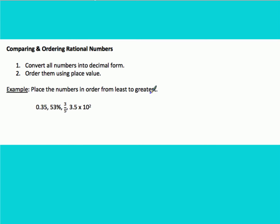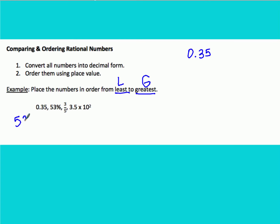Our first example says place the numbers in order from least to greatest, so make sure you start with your smallest number first — always read the directions carefully. Our first number is 0.35, which is already in decimal form. Our next number is 53%; to change a percent into a decimal, move the decimal two spaces to the left, and we get 0.53.